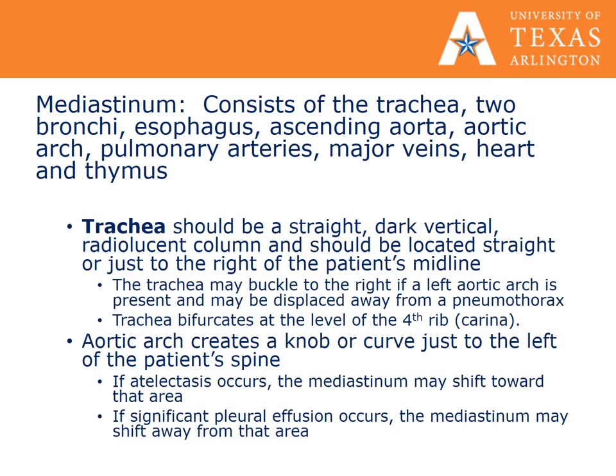The mediastinum consists of the trachea, two bronchi, esophagus, ascending aorta, aortic arch, pulmonary arteries, major veins, heart, and the thymus. The trachea should be a straight, dark, vertical, translucent column located straight or just to the right of the patient's midline. The trachea may buckle to the right if a left aortic arch is present, and may be displaced away from a pneumothorax. The trachea bifurcates at the level of the fourth rib, called the carina.